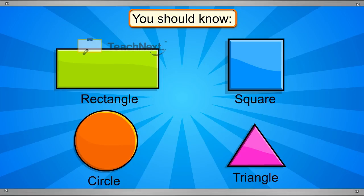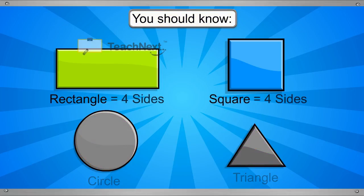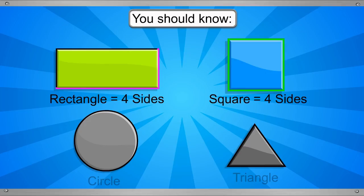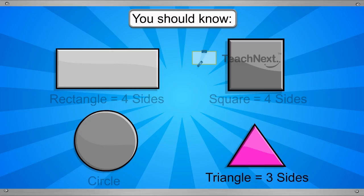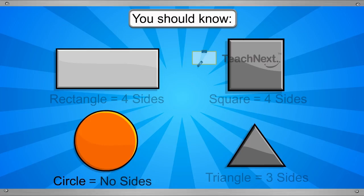A square and a rectangle have four sides. A triangle has three sides. But the circle has no sides.